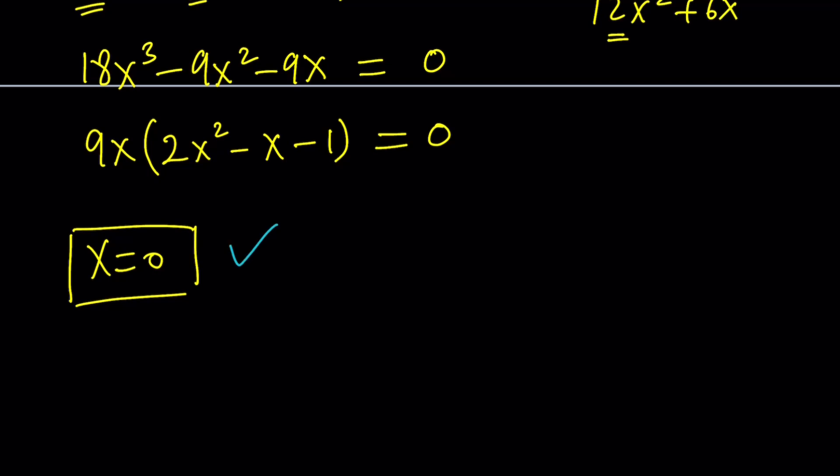And the other solutions should be coming from the quadratic. Let's go ahead and solve them using the quadratic formula: negative b plus minus the square root of b squared minus 4ac. By the way, when a and c have different signs, they're always real solutions. Something to keep in mind.